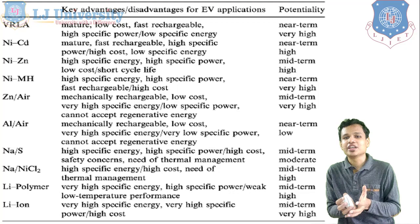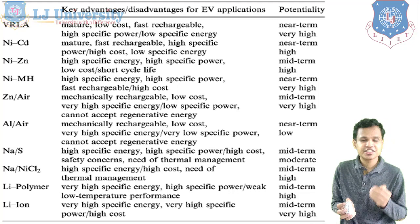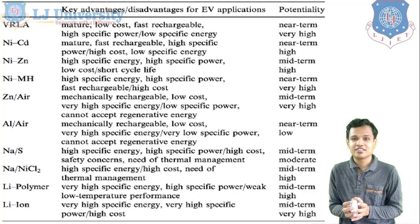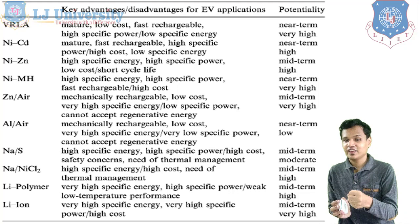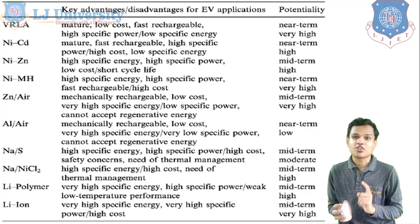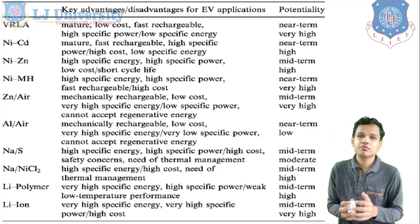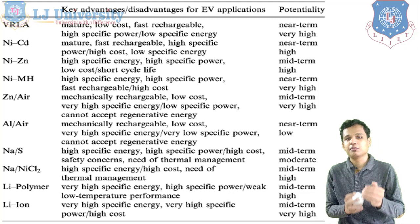Next is the nickel zinc battery: high specific energy, high specific power, low cost, but short cycle life because of the zinc electrode problem. In the medium term, it has high potentiality. Next is nickel metal hydride: high specific energy, high specific power, fast rechargeable. The only disadvantage is the high cost. It has near-term very high potentiality.